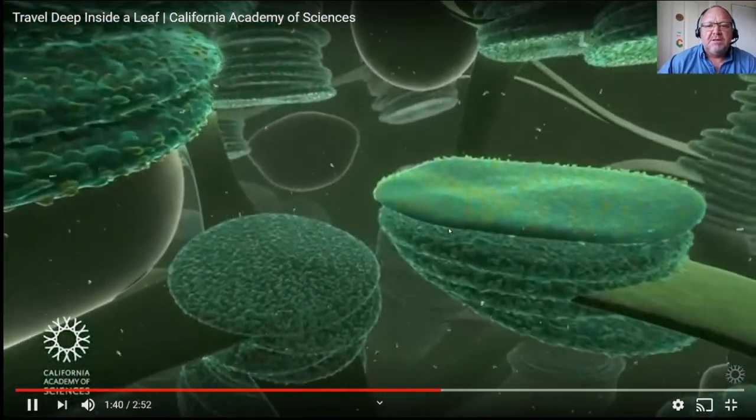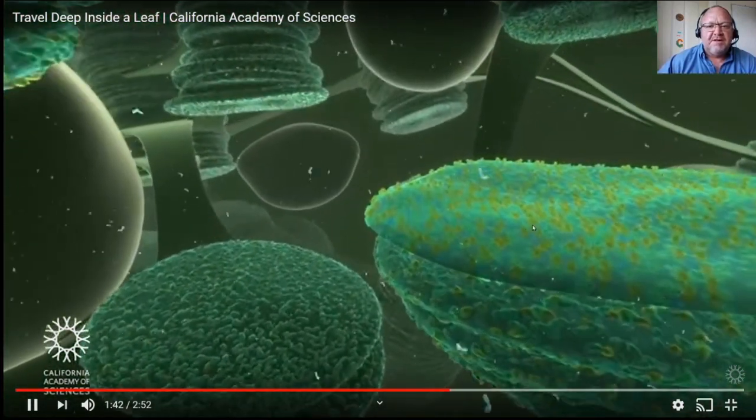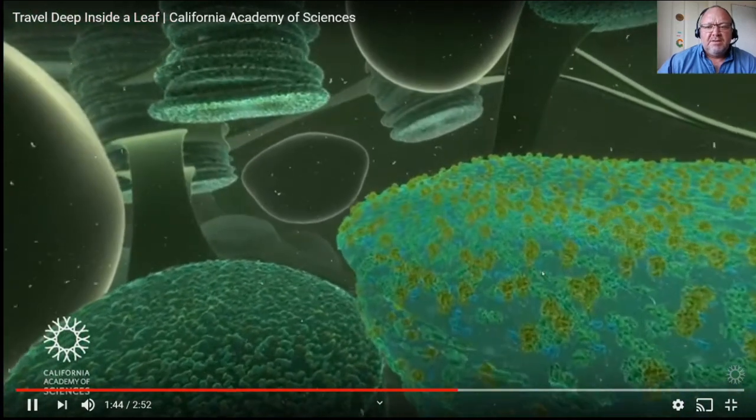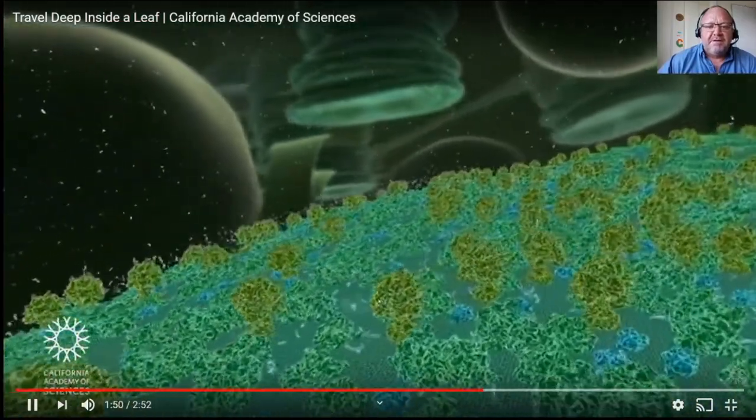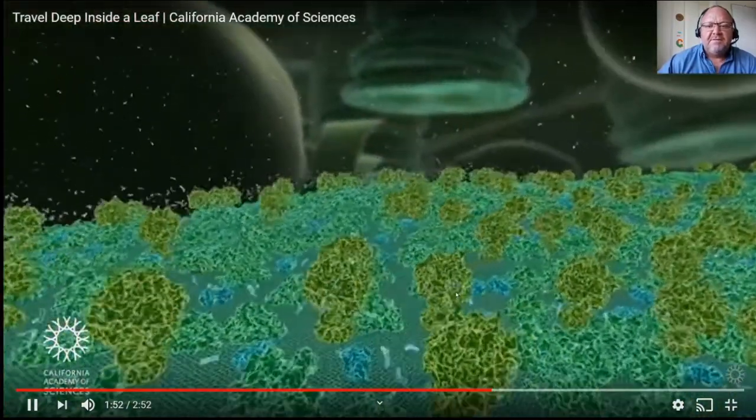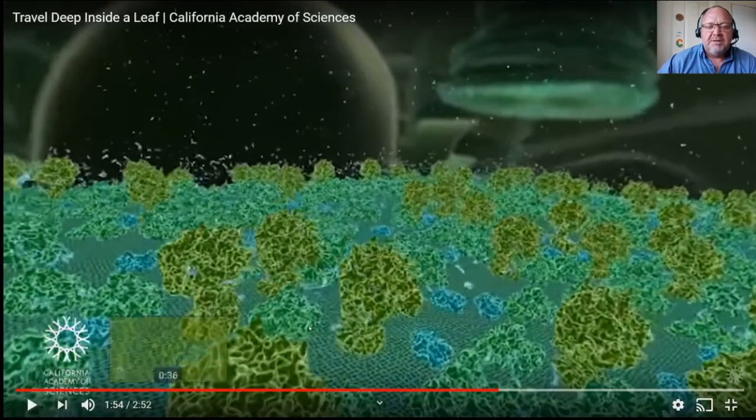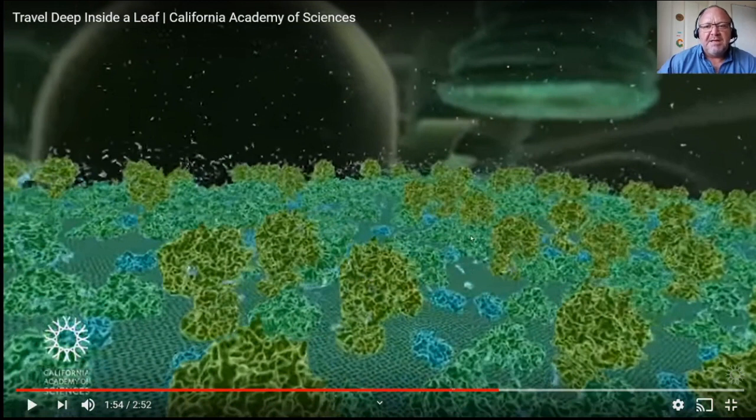So as we go closer and closer to a surface of a thylakoid, you can see what they tried to do here was to show you the chlorophyll. And as the sun comes in, the chlorophyll, and this is only showing the light dependent reaction. It's not showing the light independent reaction, because remember that happens in the stroma, and we're currently flying in the stroma.